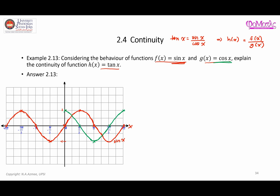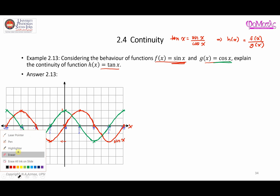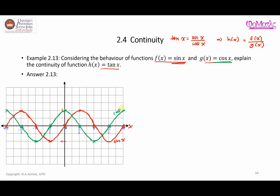Now let's focus on the negative x values. When x is −π/2, cosine equals 0. At −π it's −1. At −3π/2 it's 0, and at −2π it goes back to 1. Again, connect the dots with a smooth curve. I'm going to label this curve as cosine x.